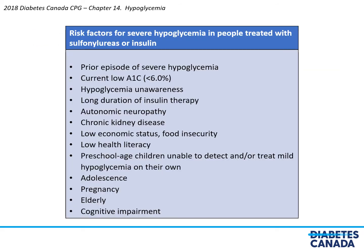Risk factors for severe hypoglycemia in people treated with sulfonylureas or insulin include prior episode of severe hypoglycemia, current low A1c, hypoglycemia unawareness, long duration of insulin therapy, autonomic neuropathy, chronic kidney disease, low economic status or food insecurity, low health literacy, preschool age children unable to detect or treat mild hypoglycemia on their own, adolescence, pregnancy, elderly, and cognitive impairment.